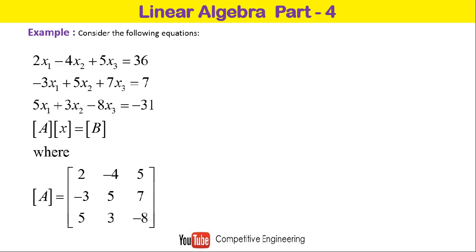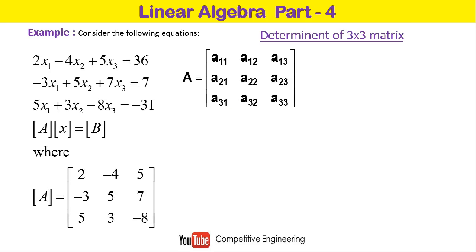We will solve an example with three linear equations and three variables x1, x2, x3. The coefficient matrix is [2 −4 5; −3 5 7; 5 3 −8] and the right-hand side matrix is [36; 7; −31]. To find the determinant of this 3×3 matrix, there is a simpler diagonal method that will be explained here.